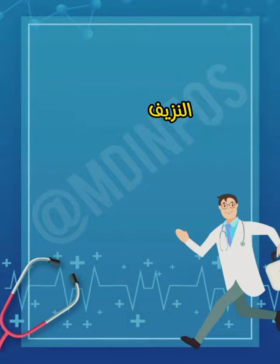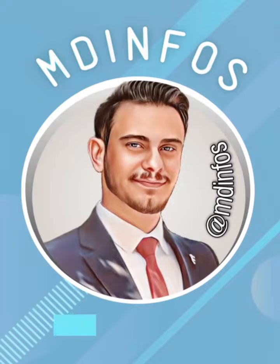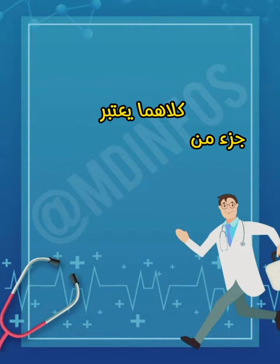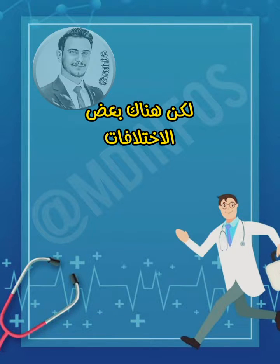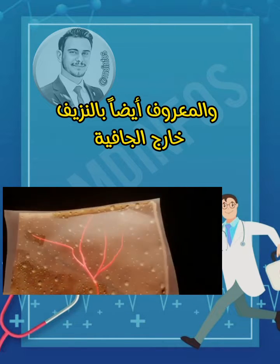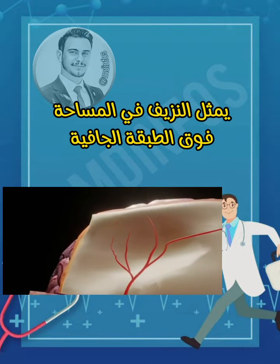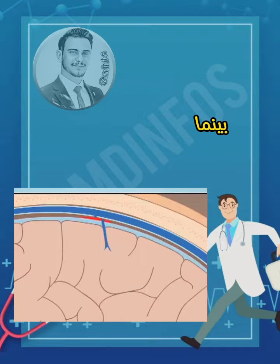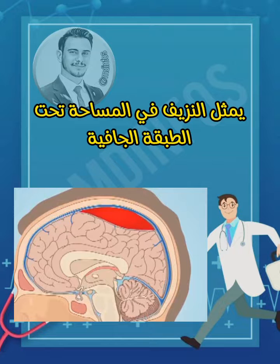Today I'll be talking about epidural versus subdural hemorrhages. They are both part of intracranial hemorrhages, but there are some differences. Epidural hemorrhage, also known as extradural hemorrhage, represents bleeding in the extradural space — meaning bleeding between bone and dura mater. Subdural hemorrhage represents bleeding below the dura mater.